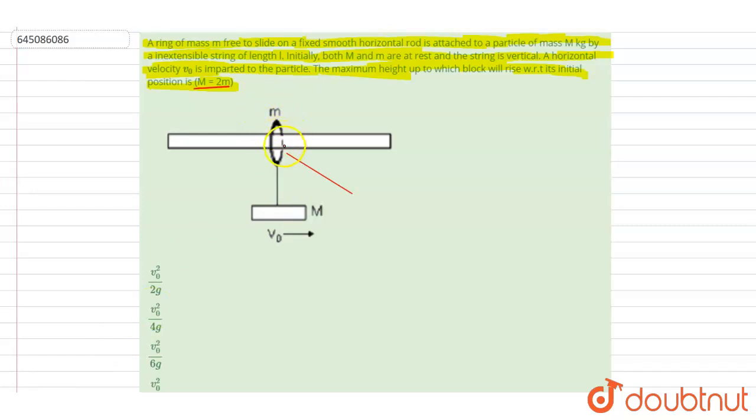First thing, if you see here the string is inextensible, so the two bodies should have same velocity along the string because the length of the string should remain constant. They can't separate along the string. They can't have the velocity of separation along the string since this string length is constant and the other thing is maximum height. So focus on these two terms. At maximum height, the